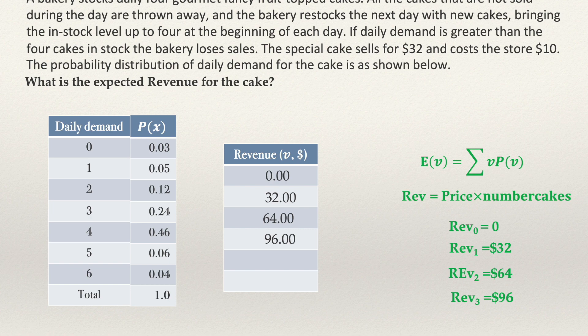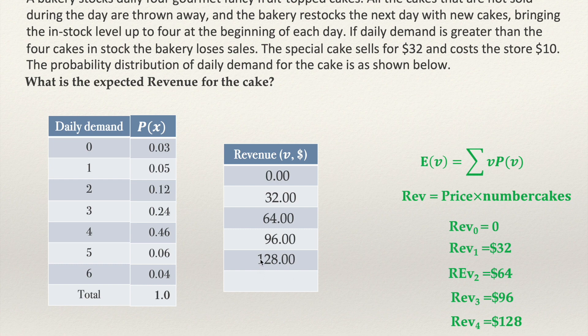Finally, we have the case in which the bakery sells all four cakes — the stock at the beginning of the day. The revenue will be 4 × $32 = $128. This is the maximum value for the revenue. There are no other possible values because the store has only four cakes at the beginning of every day, so the maximum they can sell is $128. We now have all possible values of the revenue.